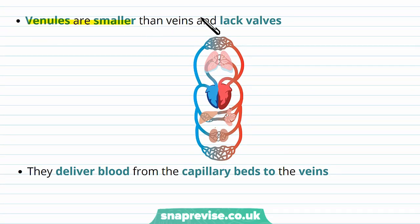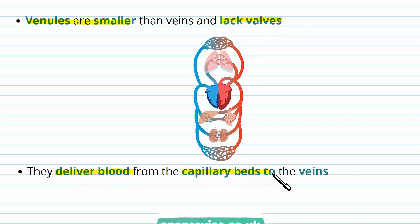Venules are the smaller versions of veins and they don't have any valves. Valves are only present in the larger veins. Venules deliver blood from the capillary beds to the veins.